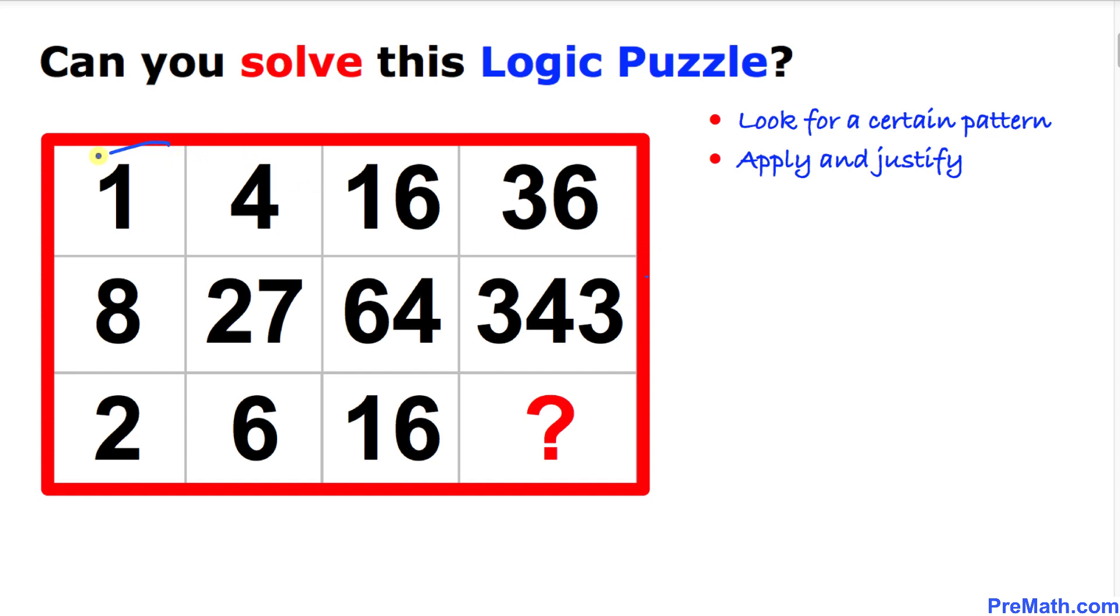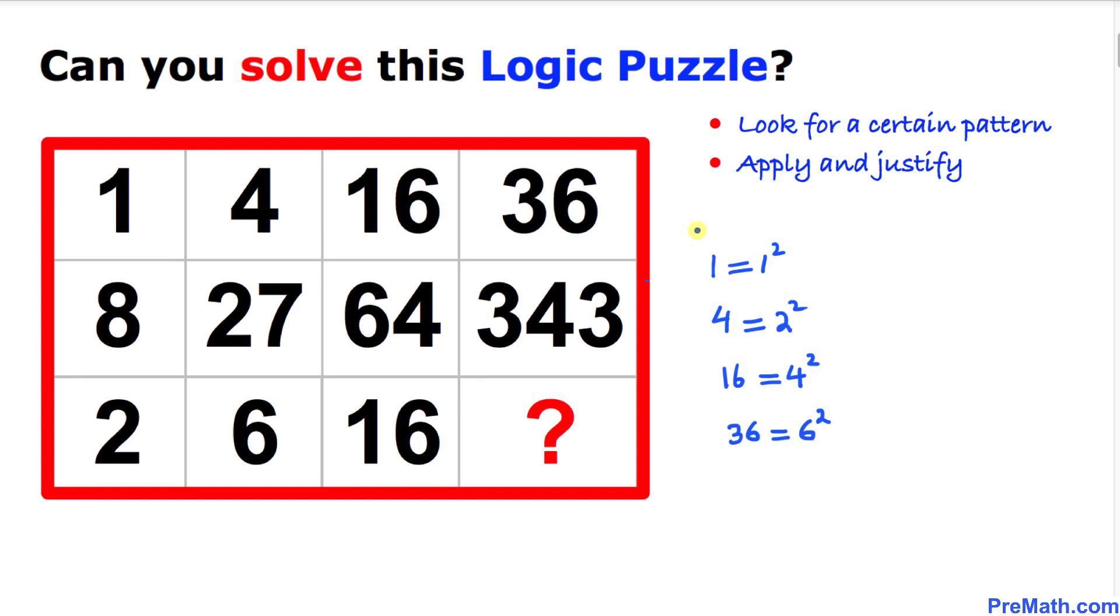Let's focus on this top row first and we can see that these numbers are perfect squares. That means 1 could be written as 1 squared, 4 could be written as 2 squared, 16 could be written as 4 squared, and likewise 36 could be written as 6 squared.